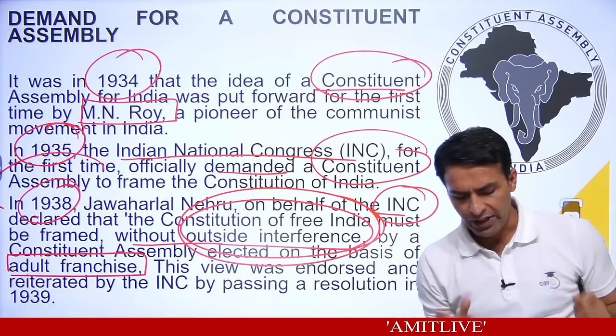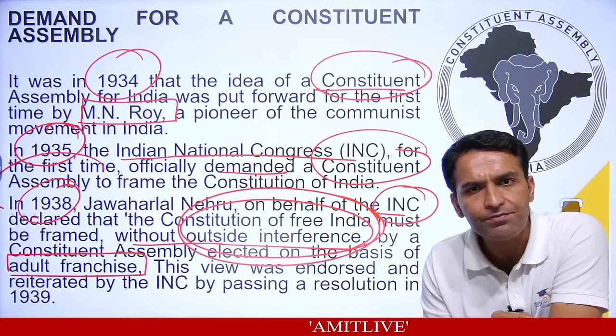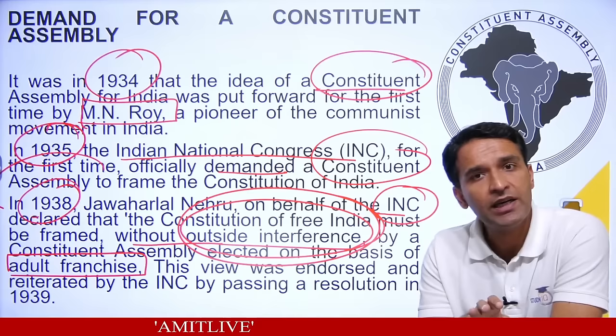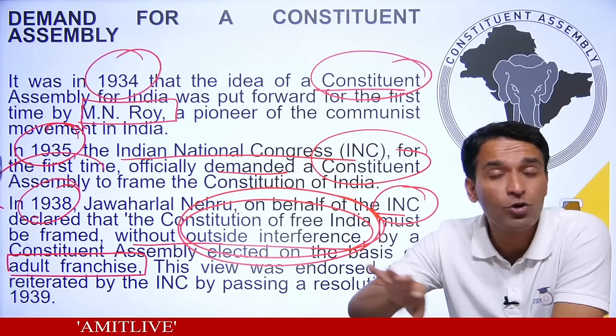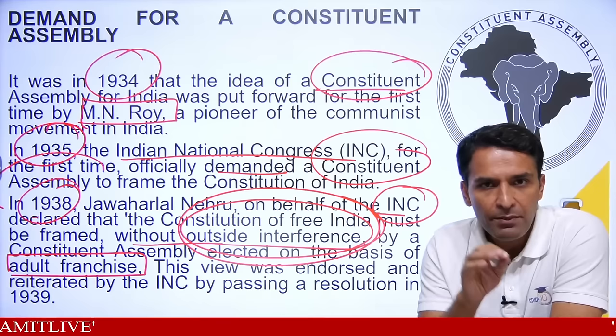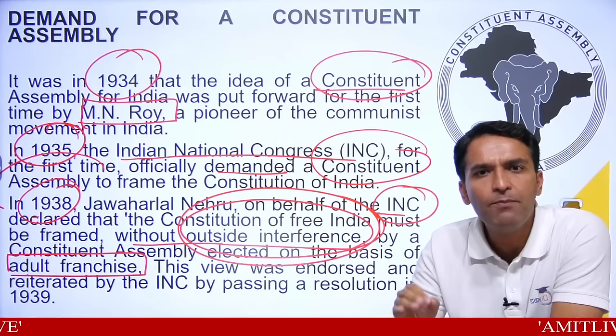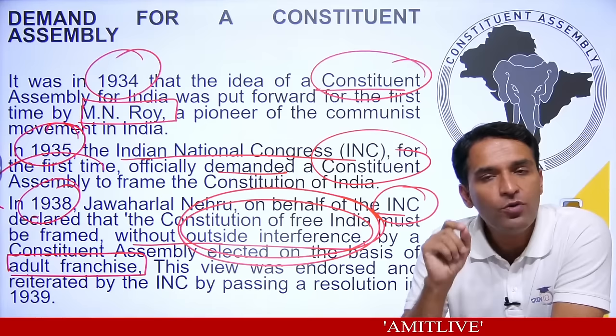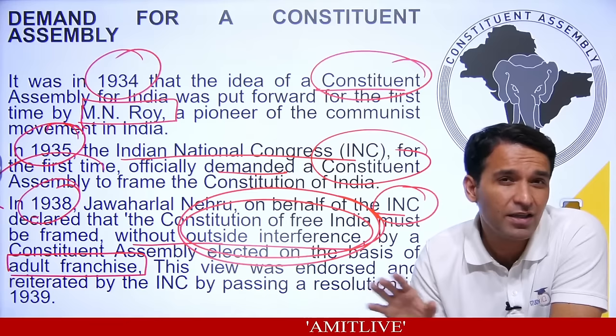To make it easier, imagine yourself as a dictator ruling a country of 5 crore people. You decide to leave and give them freedom. You need to transfer power and they would need a constitution to rule. This was exactly the problem the Britishers were facing after World War II in 1945 — a problem that the Indian National Congress had been raising since 1935.